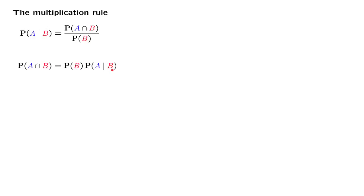Now, out of the two events A and B, we are of course free to choose which one we call the first event and which one we call the second event. So the probability of the two events happening is also equal to an expression of this form: the probability that A occurs, times the conditional probability that B occurs, given that A has occurred.